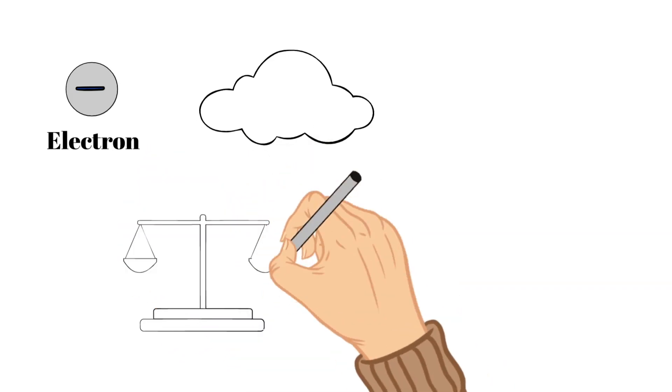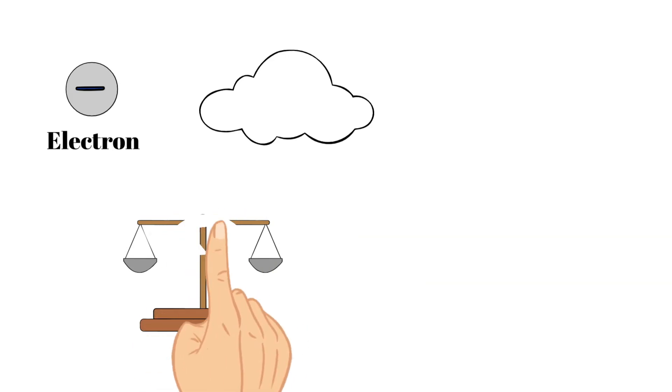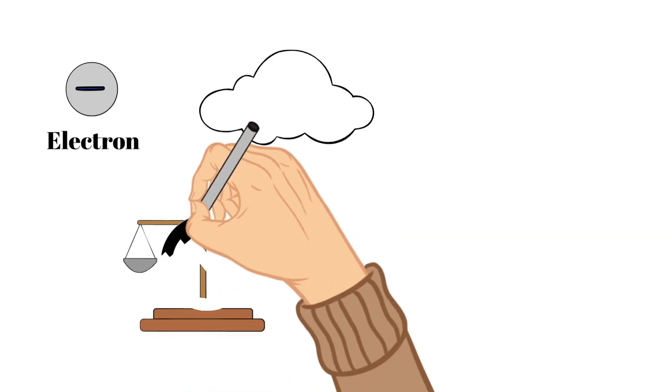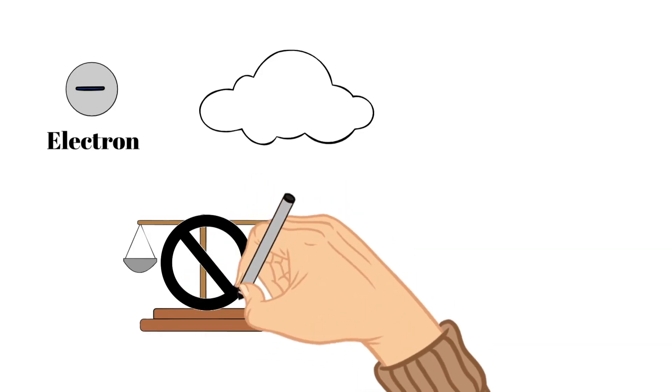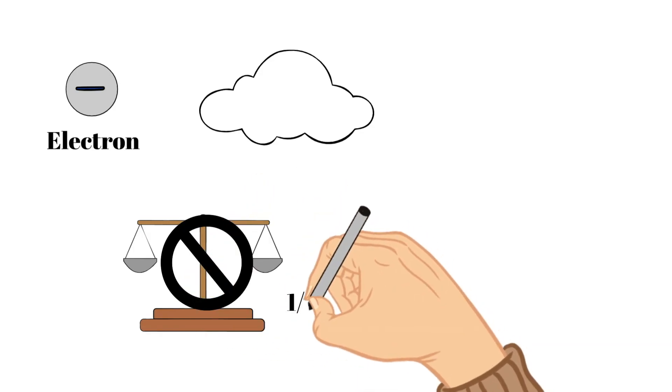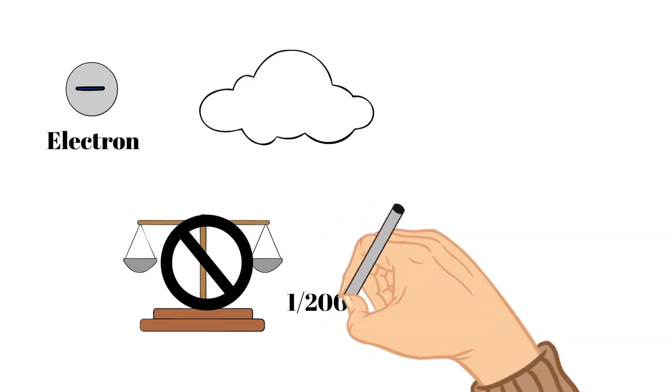Electrons are so small that the mass is not significant and they do not contribute to the mass of an atom. And actually the mass of an electron is only about one two thousandth the mass of a proton or neutron.